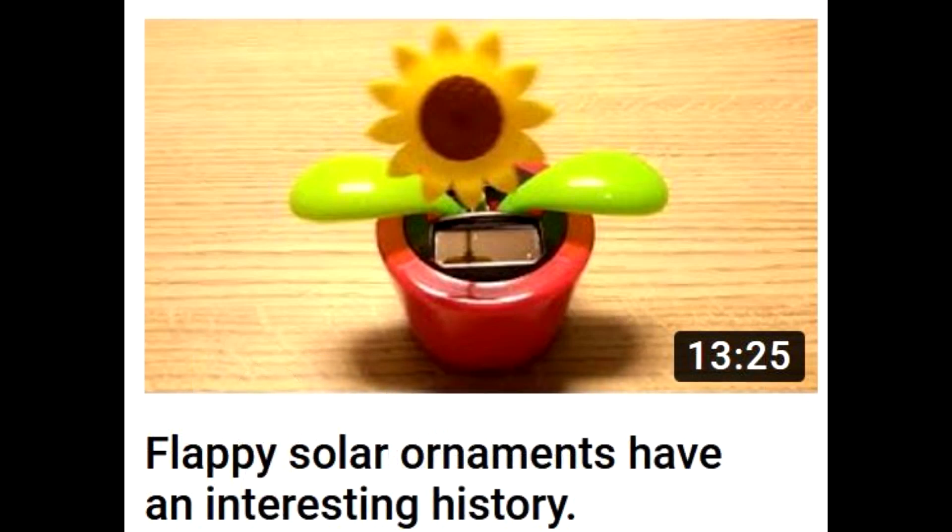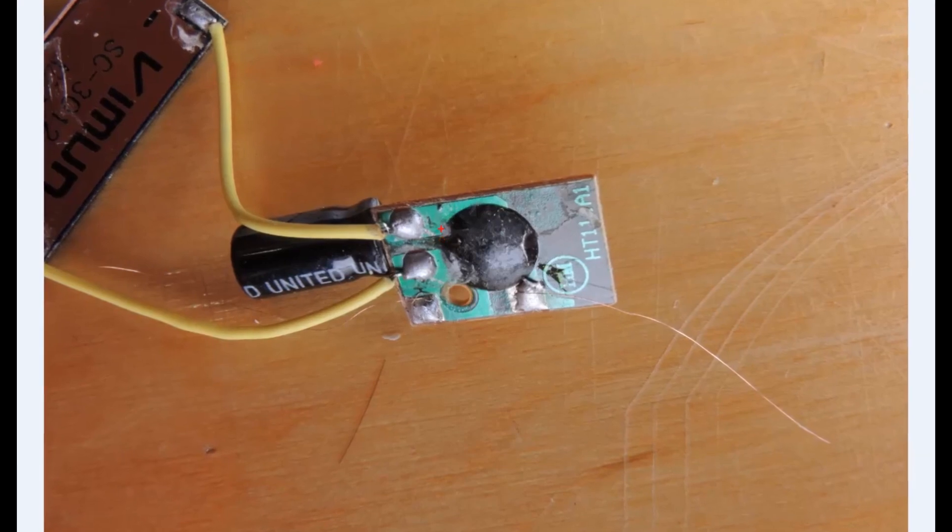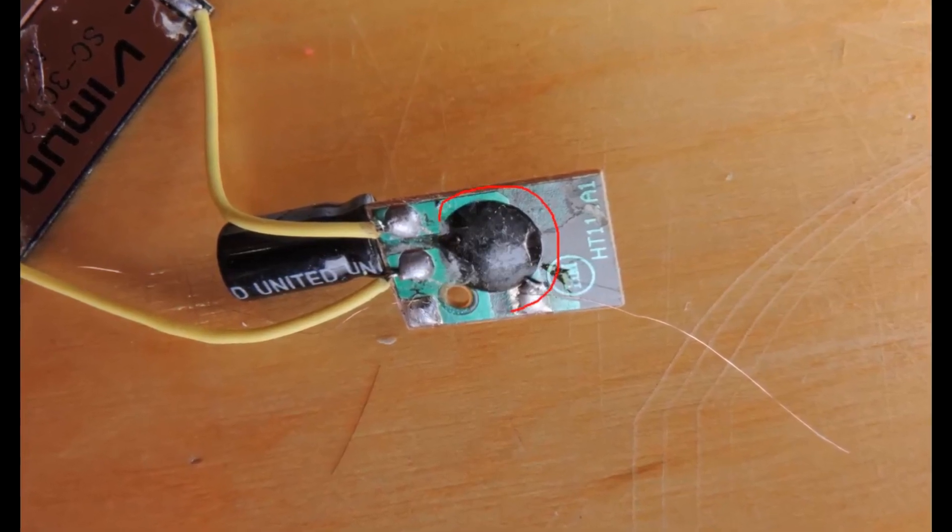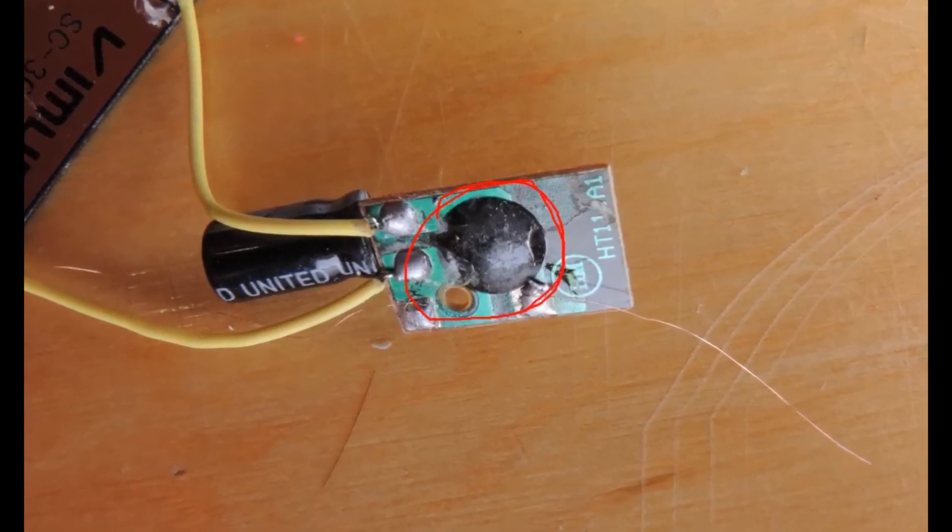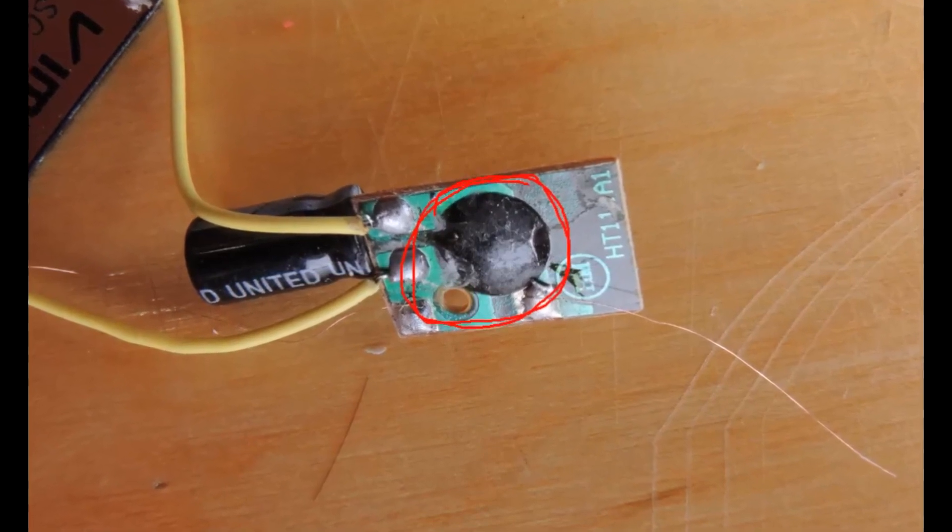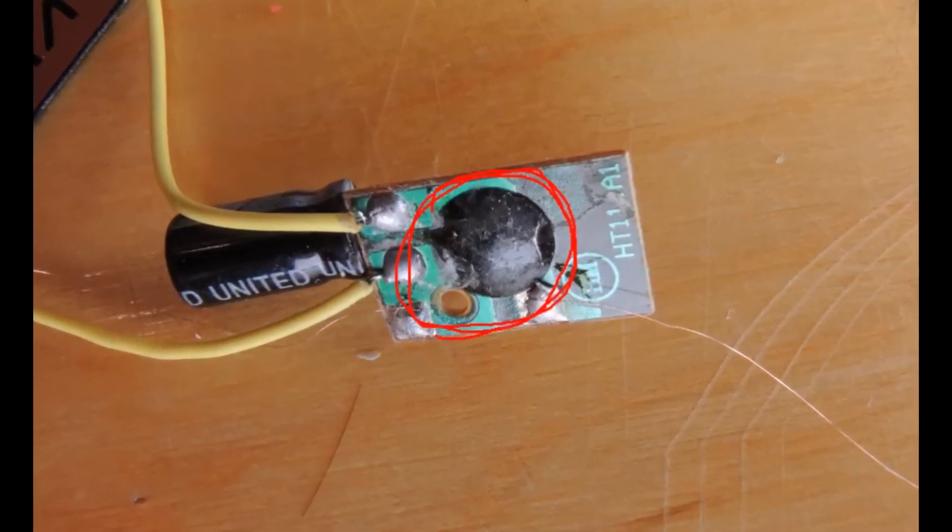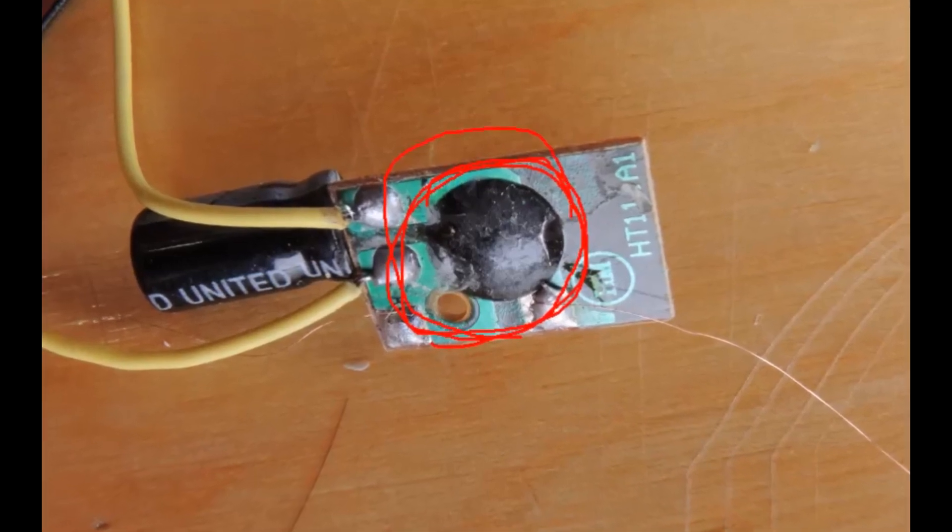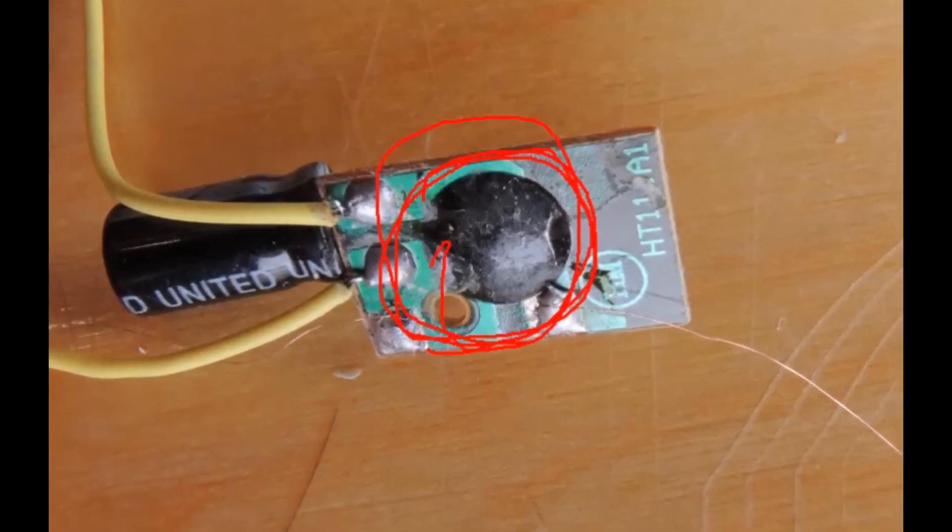He got to the point in his video where he showed that most of the circuitry is hidden under a black epoxy blob called a chip on board. And that kind of piqued my interest. I was wondering whether or not that was just simply a repurposed component from a clock or if it was actually a custom semiconductor for this particular function.